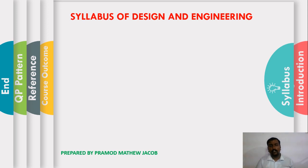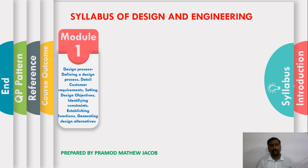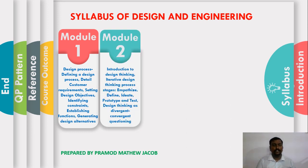The syllabus consists of five modules. Module 1 deals with how to define a design process, how customer requirements are documented, how to set design objectives, how to identify constraints while designing a product, what functions are expected from the system, and how to generate design alternatives for a particular problem.